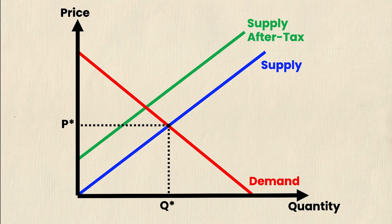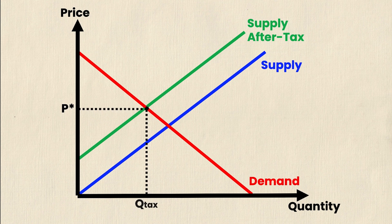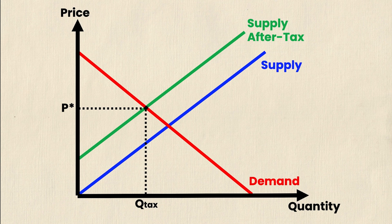But now you'll see I have a new equilibrium. I'm going to denote it up here at P star and Q tax. This is the quantity that will get traded when the tax is imposed. Now this P star can also be written as PC. This is the price that the consumers are going to pay for the product. But it's not the same as the price that the firms are going to receive.